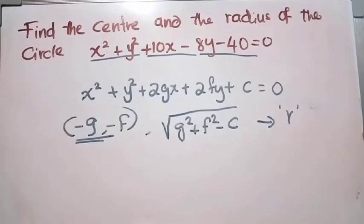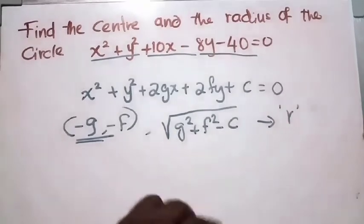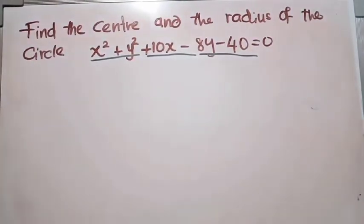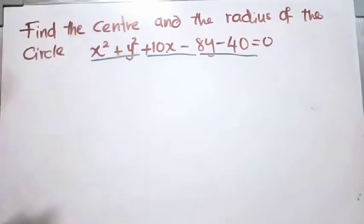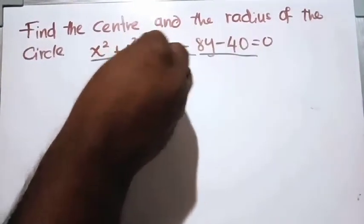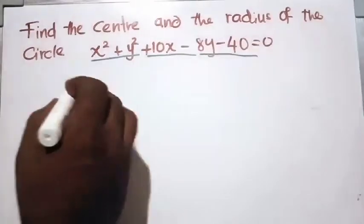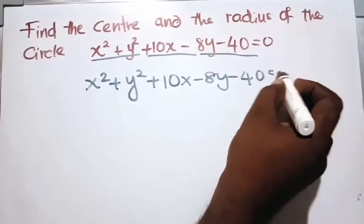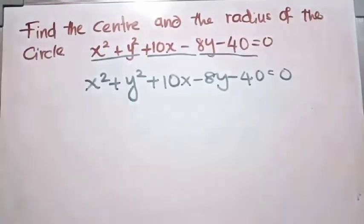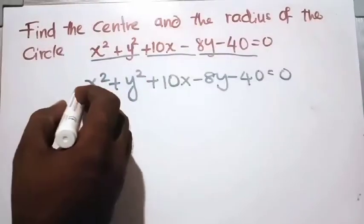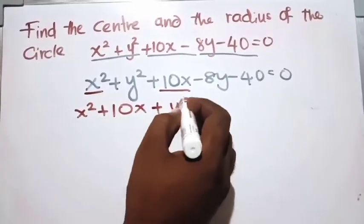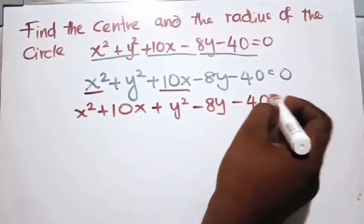It's a bit difficult to remember that formula, so we'll use our normal formula (x minus a) squared plus (y minus b) squared equals r squared. To use it, we have to convert the expanded form into simplified form. Taking x squared plus y squared plus 10x minus 8y minus 40 equals 0, let's arrange similar terms together: x squared plus 10x plus y squared minus 8y minus 40 equals 0.